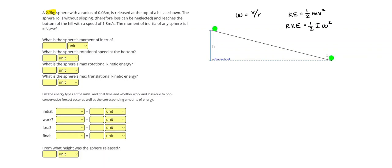A 2.3 kg sphere with a radius of 0.08 meters is released at the top of a hill as shown. The sphere rolls without slipping, so loss can be neglected, and reaches the bottom of the hill with a speed of 1.8 meters per second. The moment of inertia of any sphere is i equals 2 thirds m r squared.